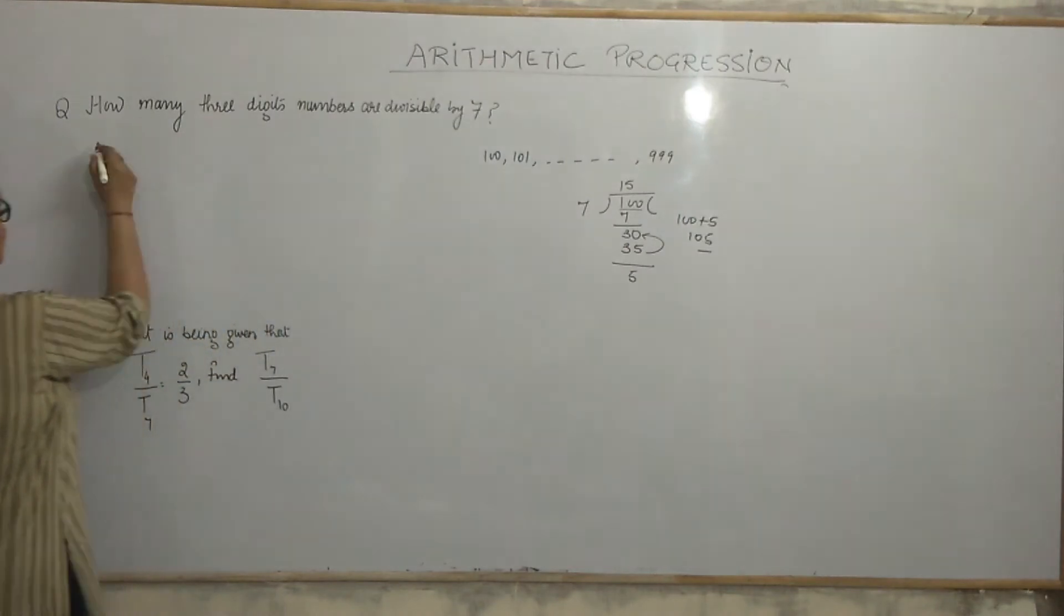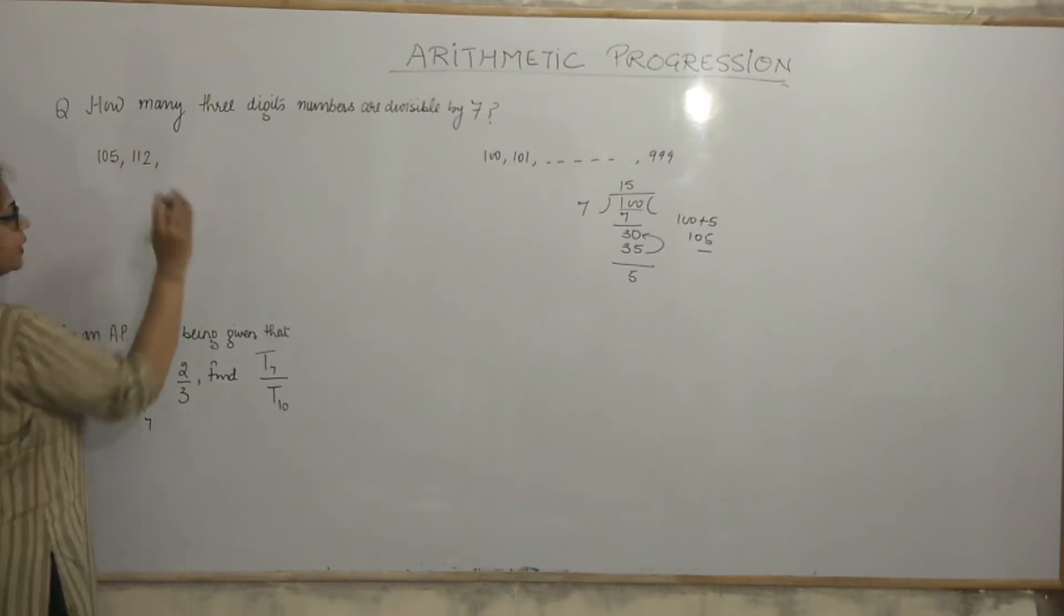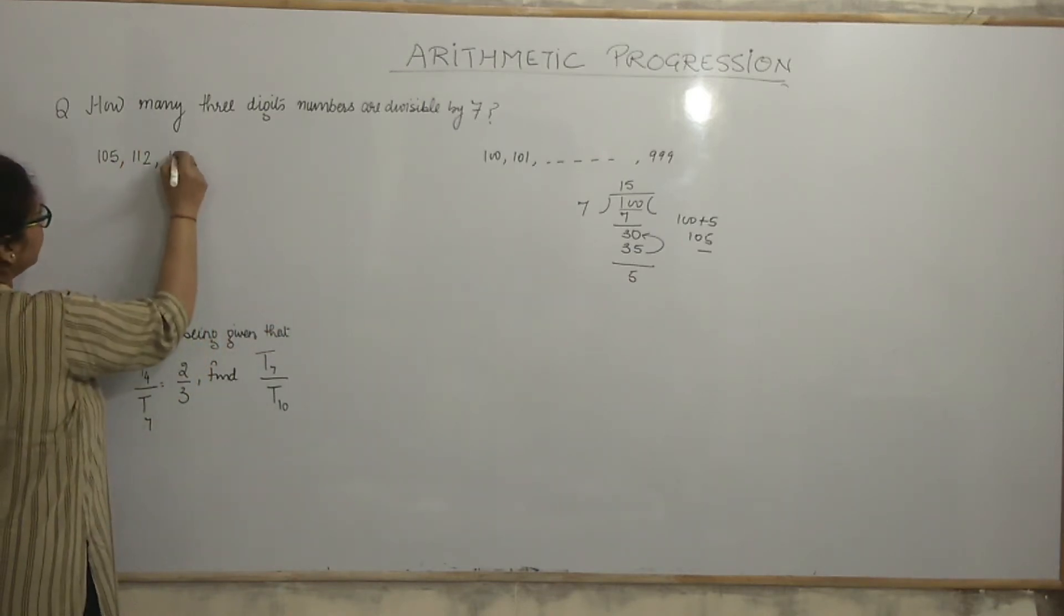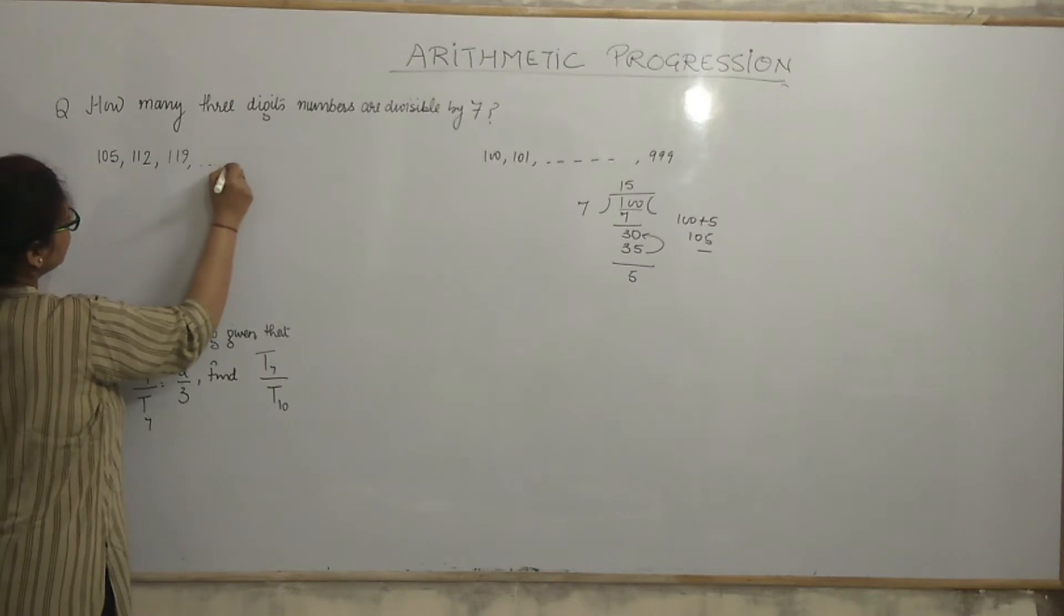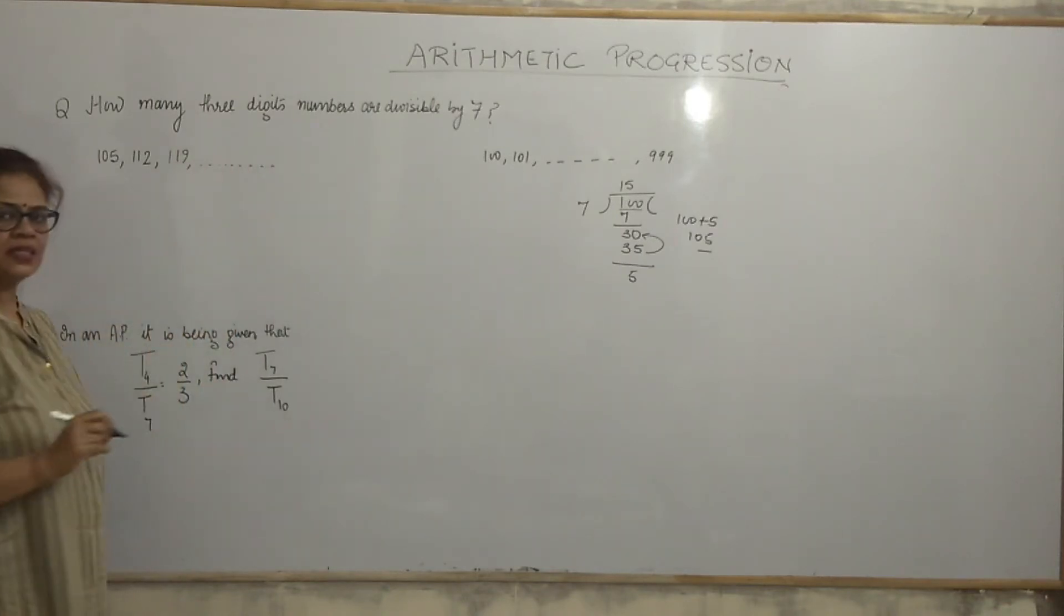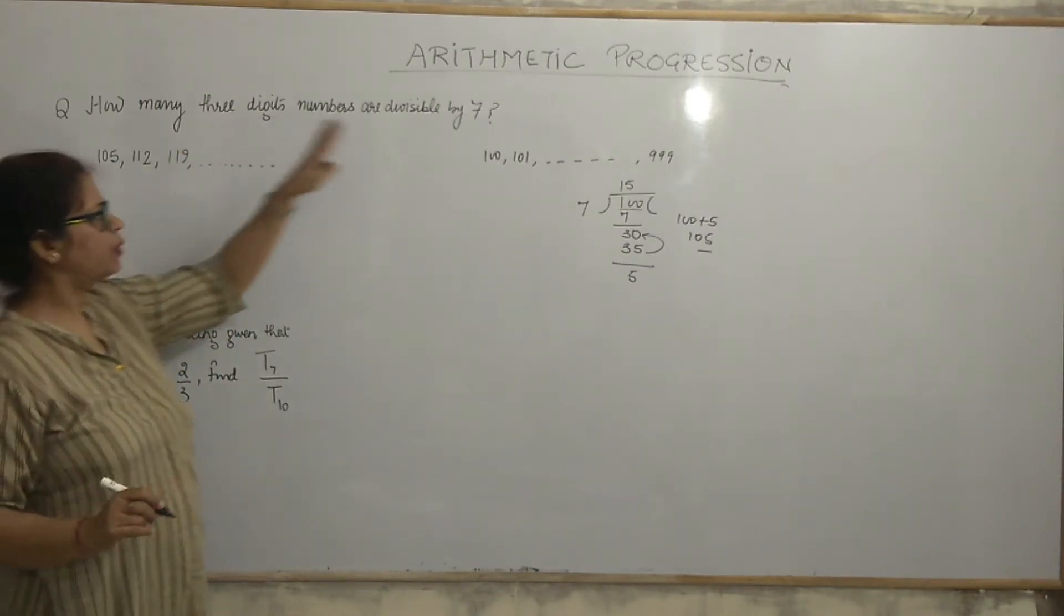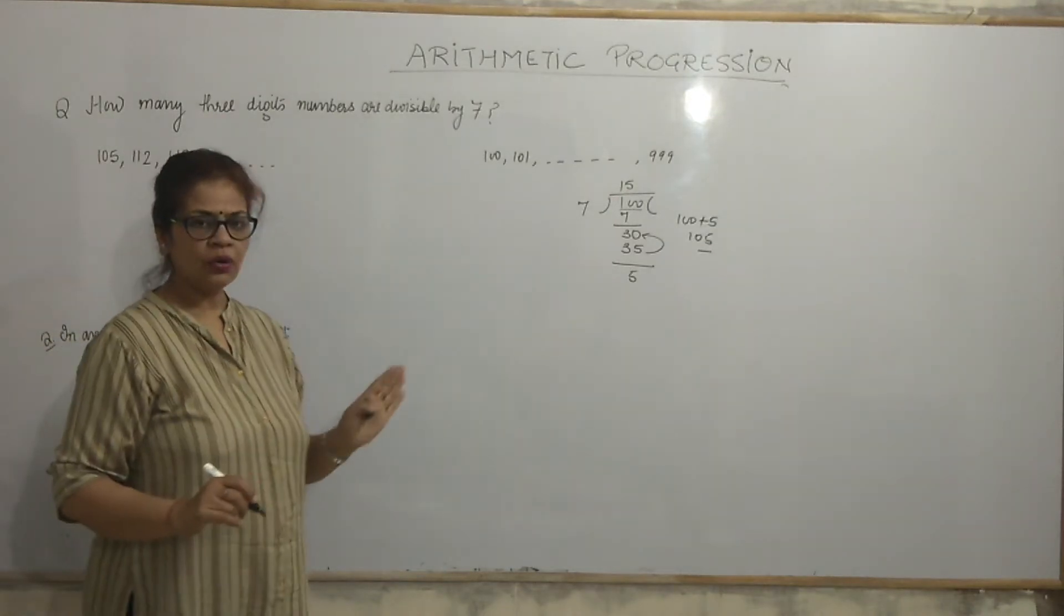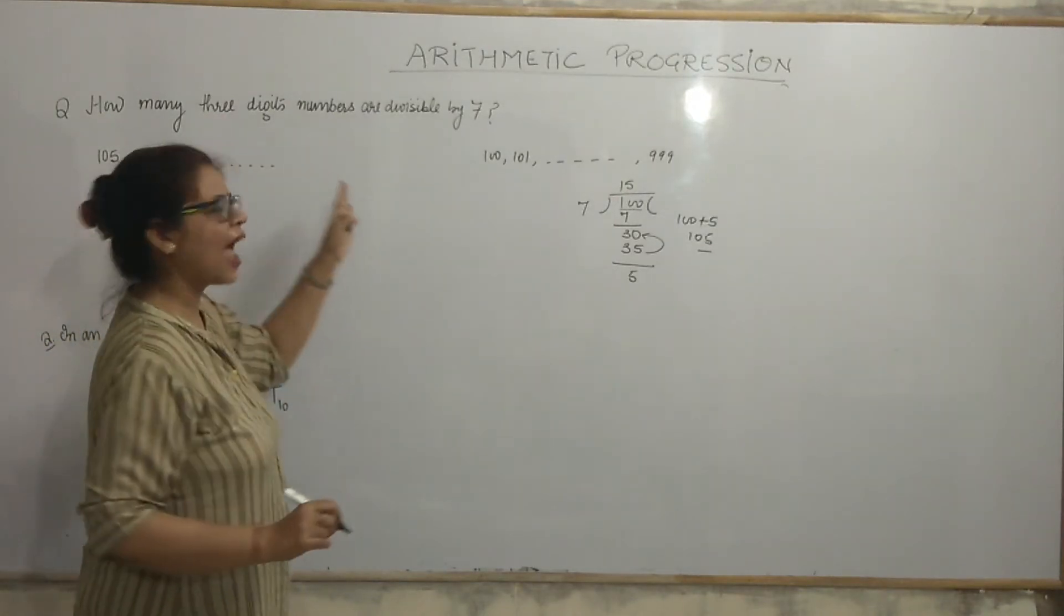I am choosing 3-digit numbers, not less than 100. We know that there is a series of 2-digit numbers. So 5, that means I need to add 5. 105 is the very first number which is divisible by 7. So, 105, then add 7, you will get 112, then add 7, 119. So, I got a series which is divisible by 7.